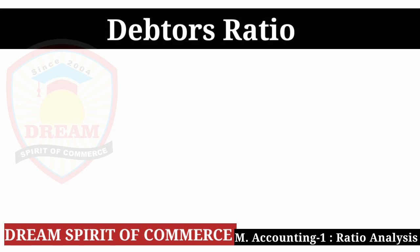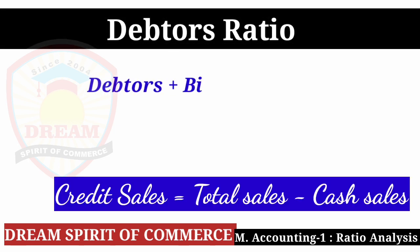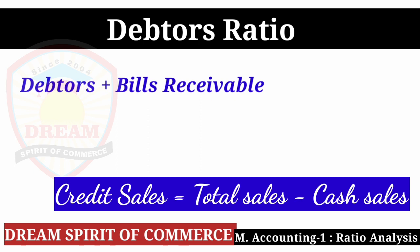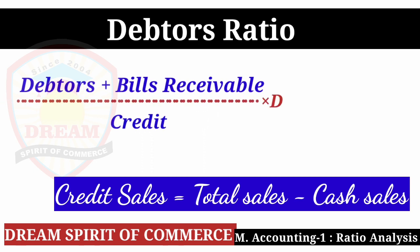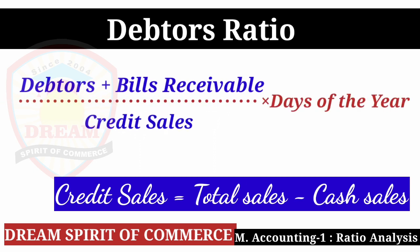Now Debtors Ratio: Debtors Ratio equals Debtors plus Bills Receivable divided by Credit Sales, multiplied by Days of the Year. Credit Sales equals Total Sales minus Cash Sales. Days of the year is basically 365, but if the sum gives a specific direction (e.g., 300 days), use that; otherwise use 365.